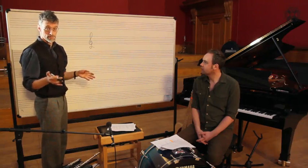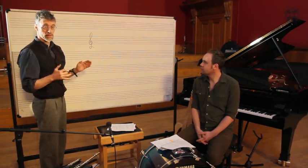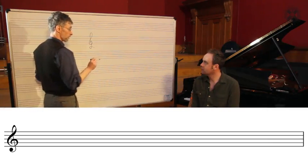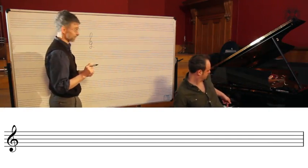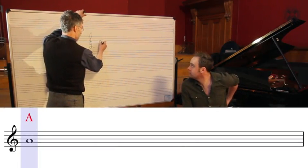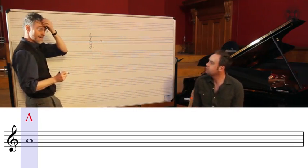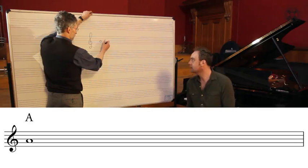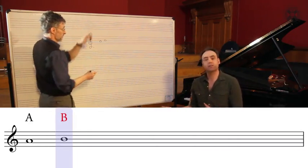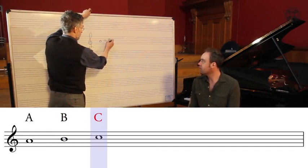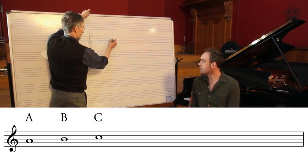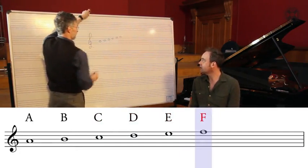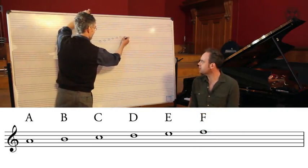We'll start with A, which on the piano sounds like A, and I'll put that right here on this space. So the next thing alphabetically is B, which sits on the line just above that space. Then C is in the space above, D on the next line, E on the next space, F on the next line, and G can perch just on top of the stave.